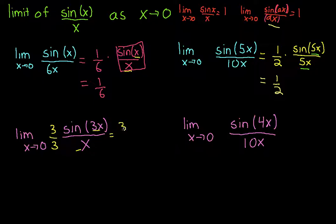This becomes 3 times sin(3x)/3x. Now in the bottom we have 3x. Because all of this matches, this part equals 1, so my final answer is 3.